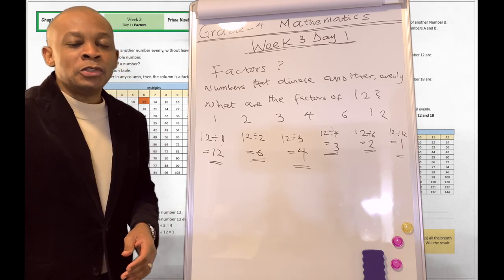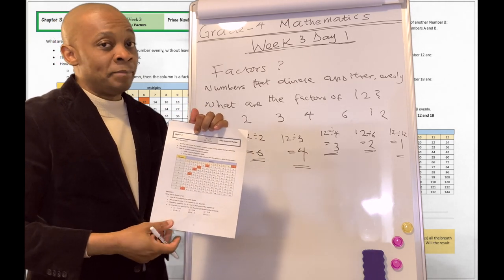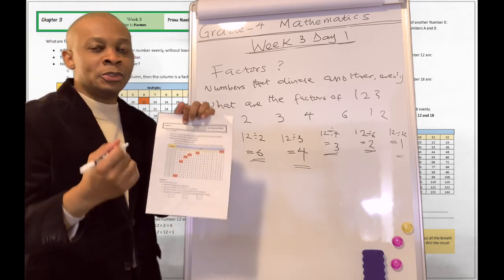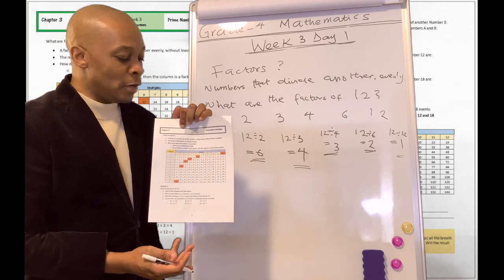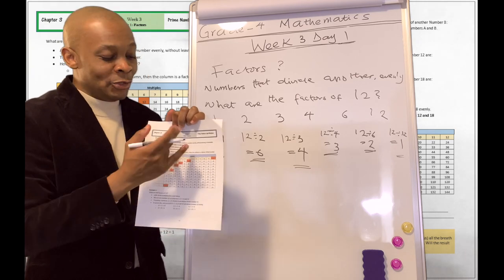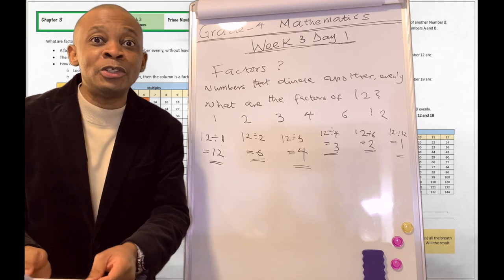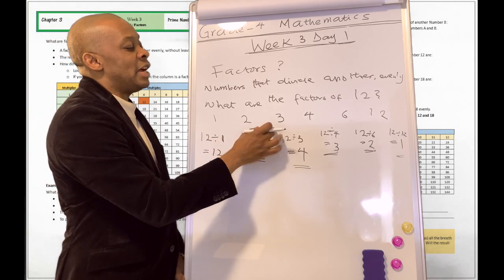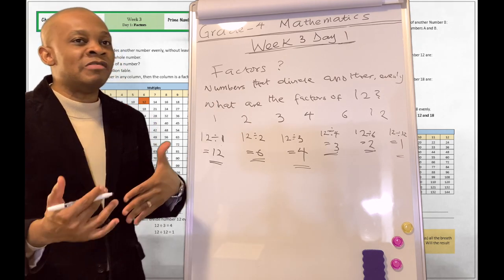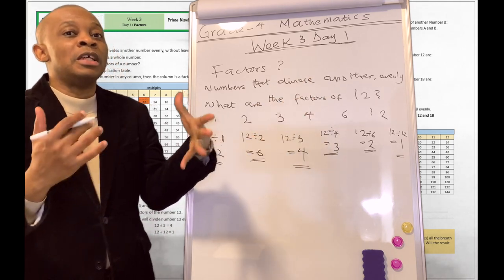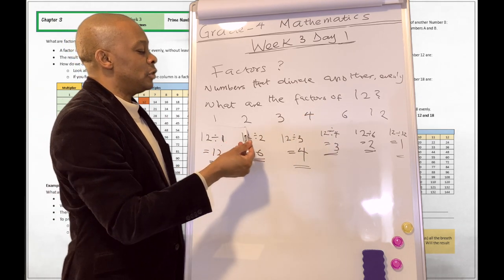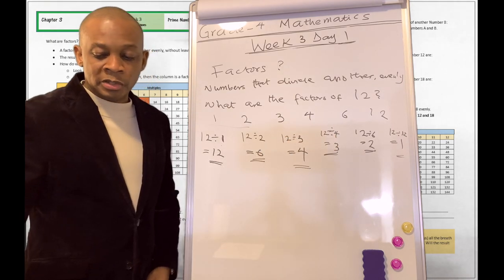So don't forget: use your multiplication table, which you should have committed to memory. If you haven't, please go ahead and review it again — one times one is one, one times two is two, and so on through column one and column two. You're going to be using the multiplication table a lot. That's how to calculate factors: ask yourself what numbers will divide another number evenly — those are the factors.